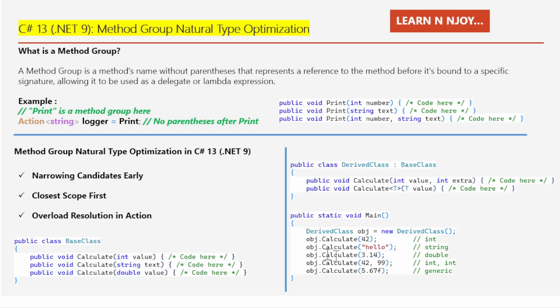Now if you see obj.calculate("hello"), here I'm passing a string argument. So it will check this string argument in the derived class. The compiler checks the derived class but does not find a method for a string. Then it goes and checks the base class and finds this calculate(string text) method. So that's the one it's going to use.